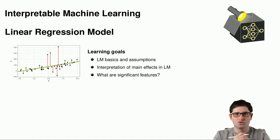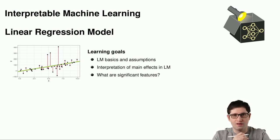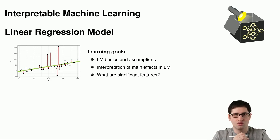Hi, in this session we will focus on the linear regression model starting with fundamental basics and assumptions. We are not going into detail about how a linear regression model is estimated from a mathematical perspective. We will mainly focus on interpretations that these models provide us, starting with main effects and how they are interpreted for different kinds of features — categorical and numerical — and we will also explain what significant features mean, including p-values and t-statistics.